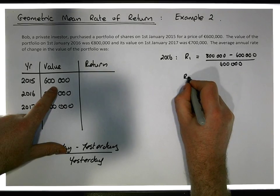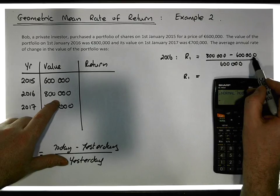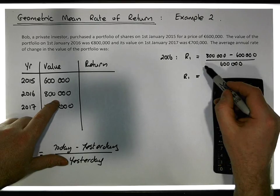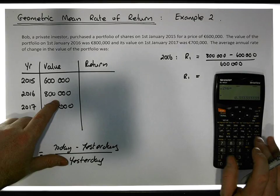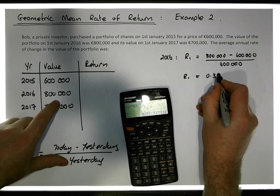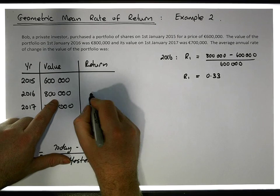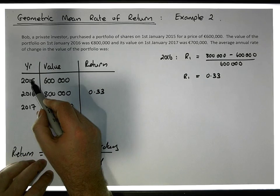So the return R1 equals, we have 800 minus 600 which gives us 200,000, divided by 600,000, that's 2 divided by 6, which gives us a value of 0.33. So there was a 33% increase in the value of the portfolio between 2015 and 2016.